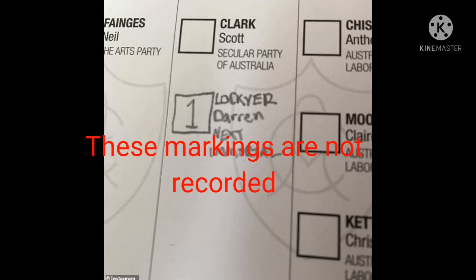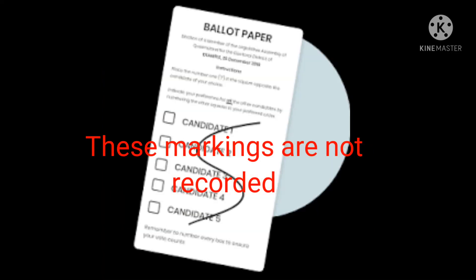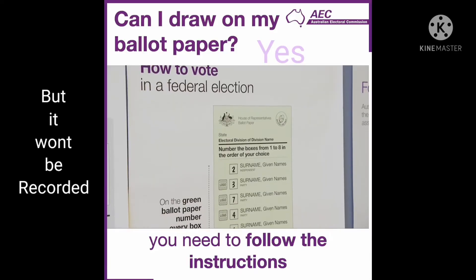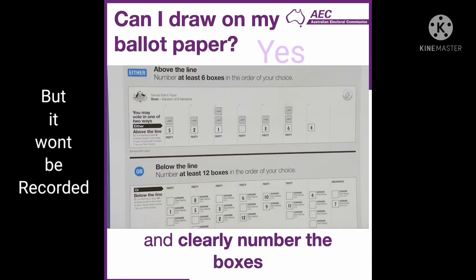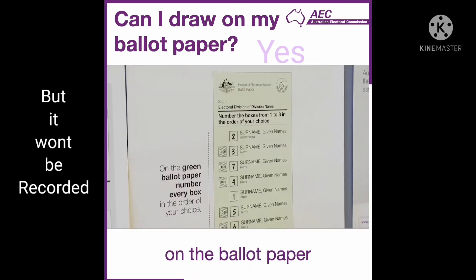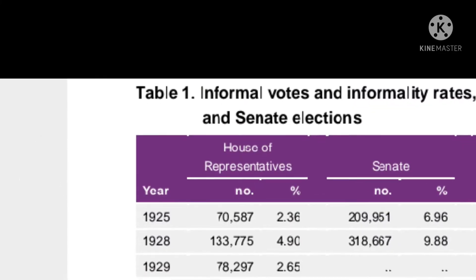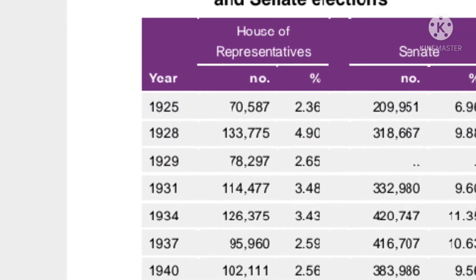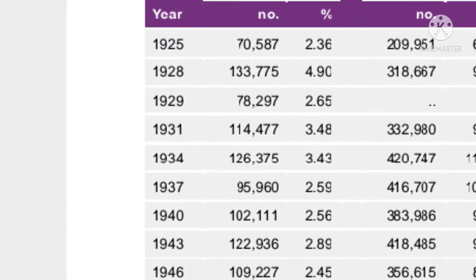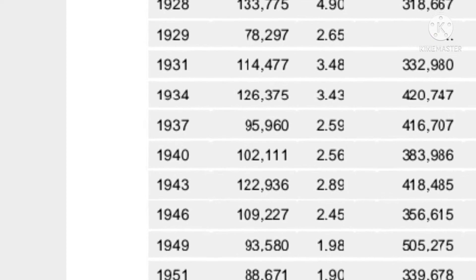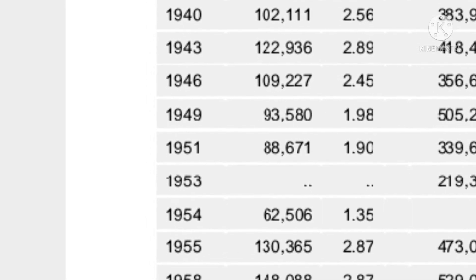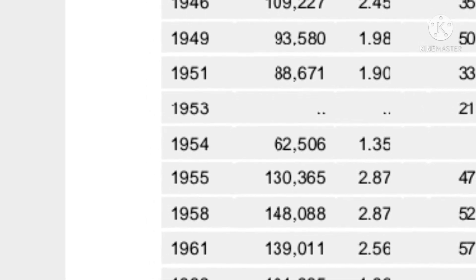The reason that a voting paper is declared informal is not recorded, just as the reason from a formal vote against a particular candidate is not recorded. The proof that informal votes are counted is shown in the statistics of every election since at least 1925.